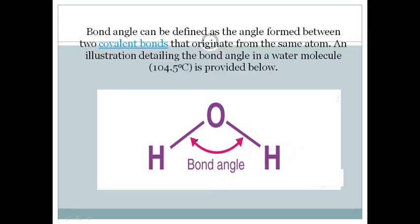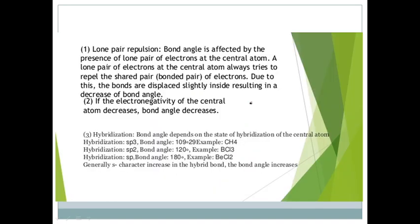Another definition: bond angle can be defined as the angle formed between two covalent bonds. We can also say the bond angle is formed by two covalent bonds that originate from the same central atom. The angle formed between them is called the bond angle.